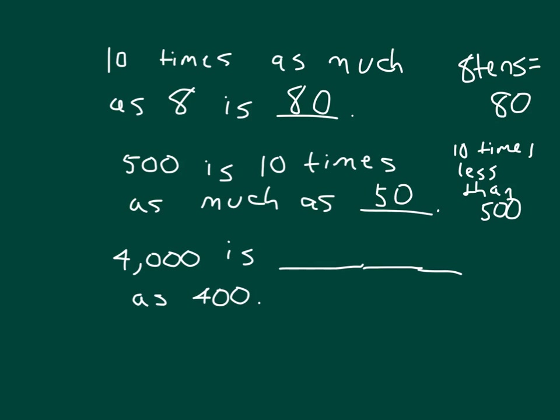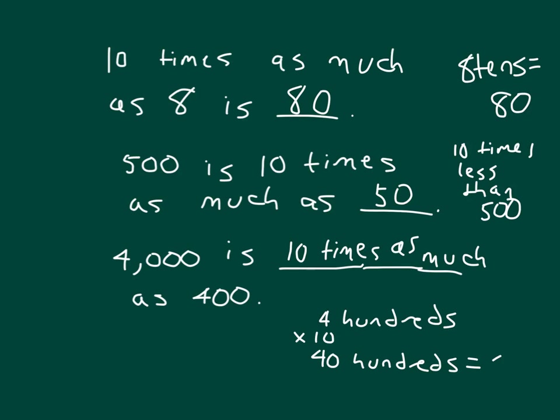4,000 is blank much as 400. I'll at least write your much in there. What did you put in? It's 10 times as much as 400. So 10 times 400 would give you 4,000. Or if we look at this here, we have 4 hundreds. And for each of those hundreds, they're now worth 10 hundreds. So that we would have 40 hundreds. 40 times 10 is 40 hundreds, which does equal 4,000.